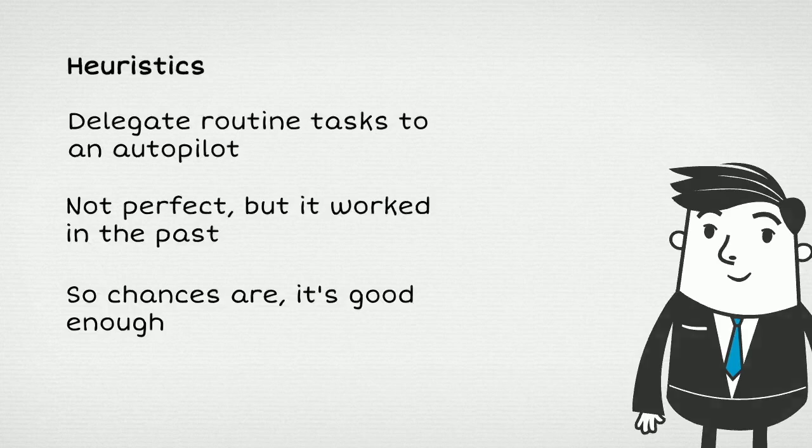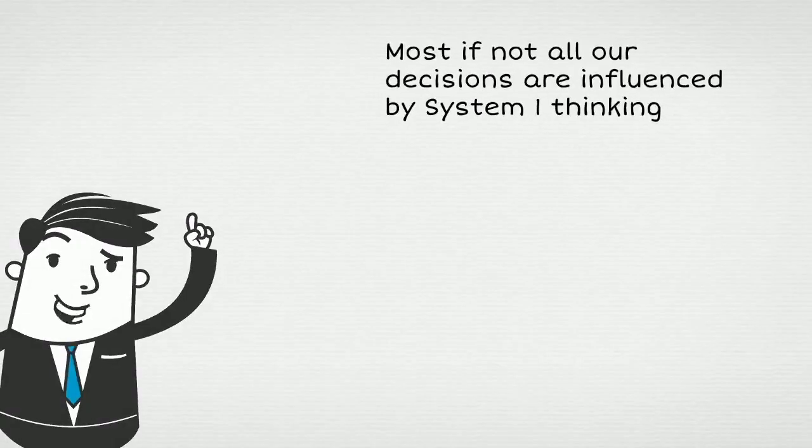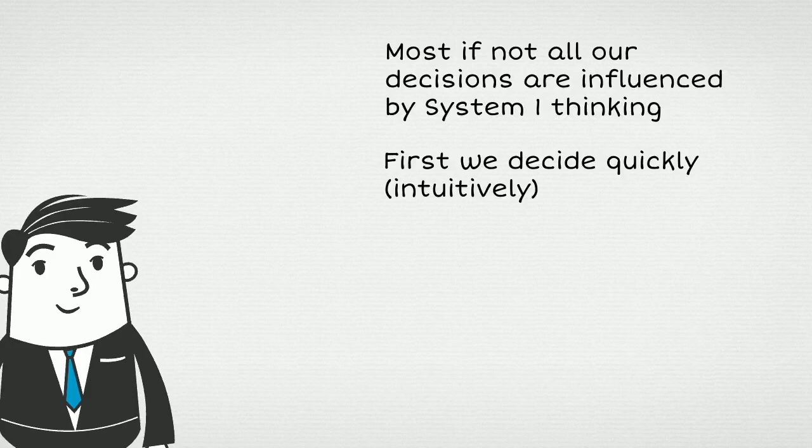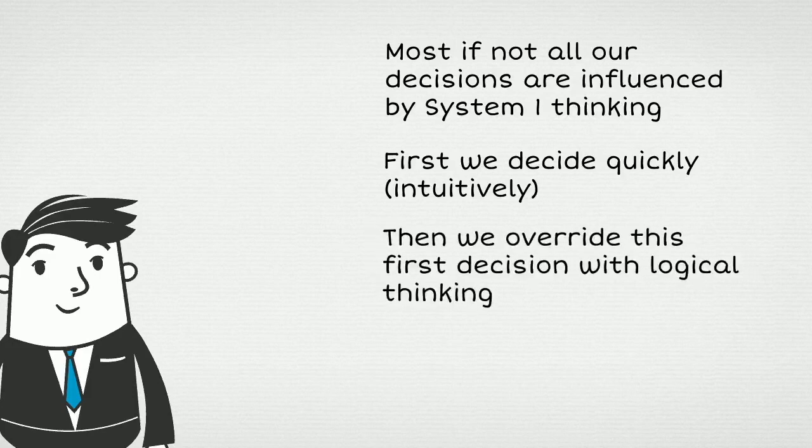Most, if not all, decisions we make are by definition influenced by System 1 thinking. First you make a quick intuitive decision and then, if you think the situation is important enough, you override it with logical System 2 thinking and correct it if necessary.